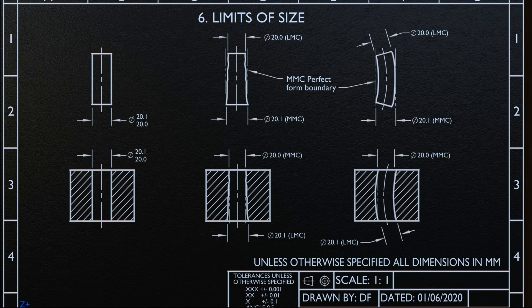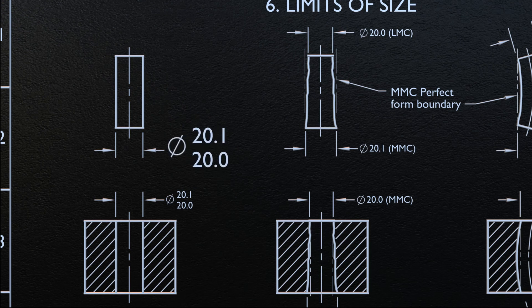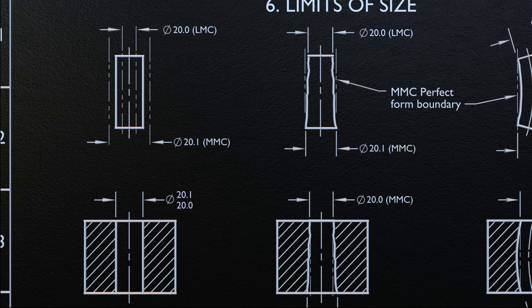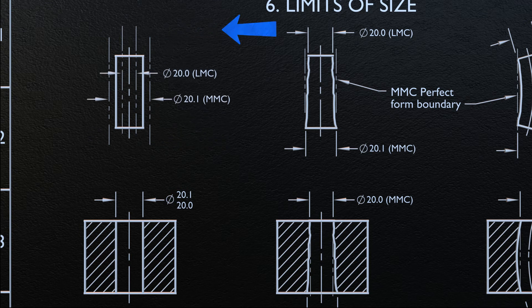Unless otherwise specified, the limits of the size of a feature prescribe the extent within which variations of geometric form, as well as size, are allowed. In this example, we are going to look at the diameter feature with the upper limit as 20.1 and lower limit as 20.0. This control applies solely to individual regular features of size, which is the diameter. The actual local size of an individual feature at each cross-section shall be within the specified tolerance of size, which is within 20.0 and 20.1.